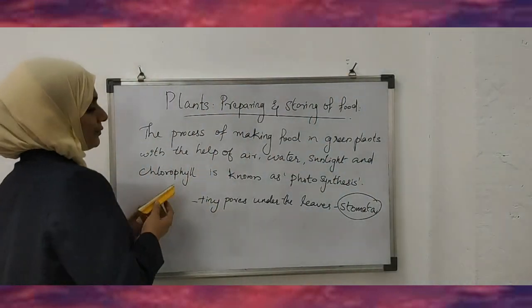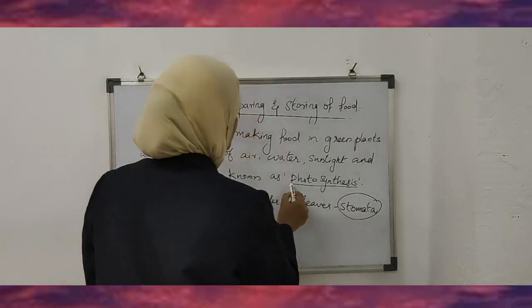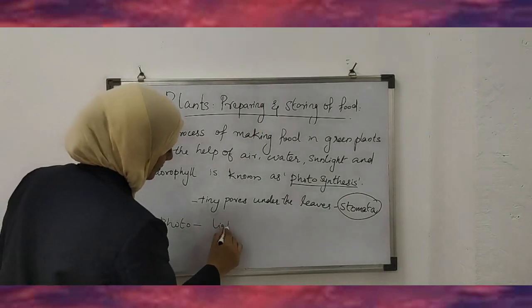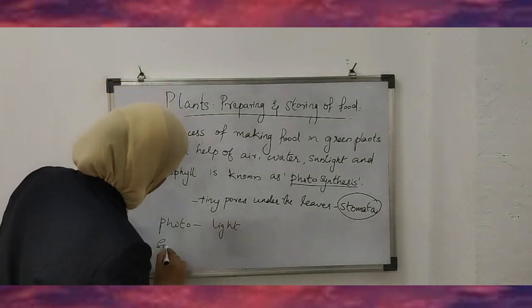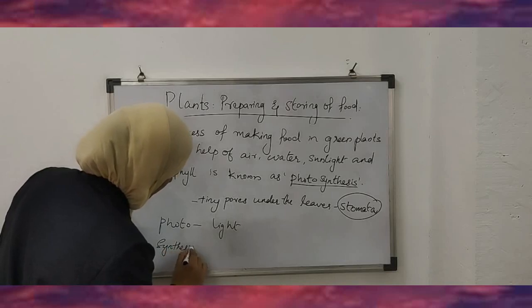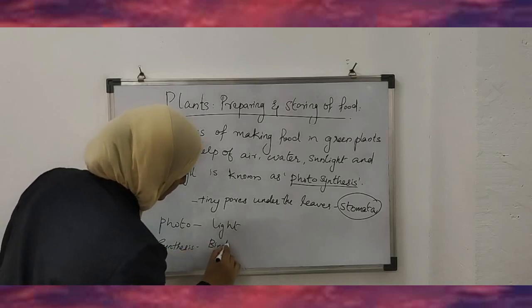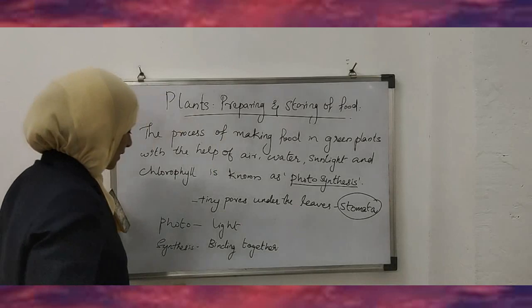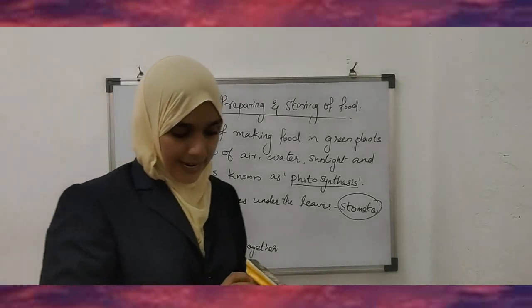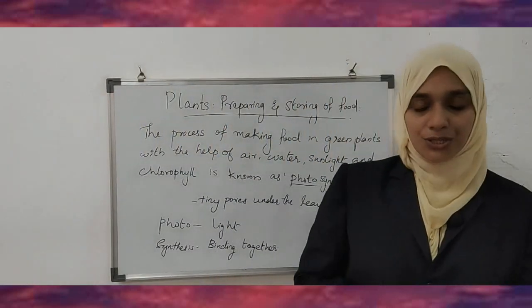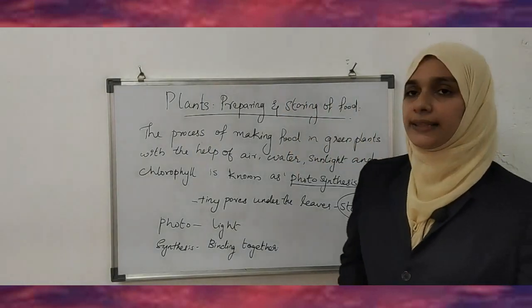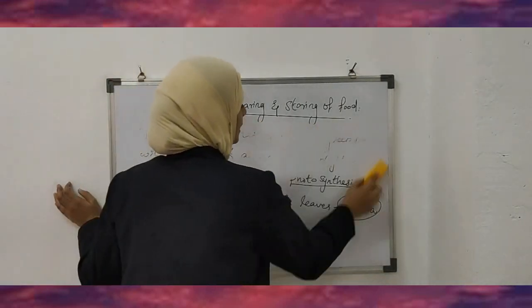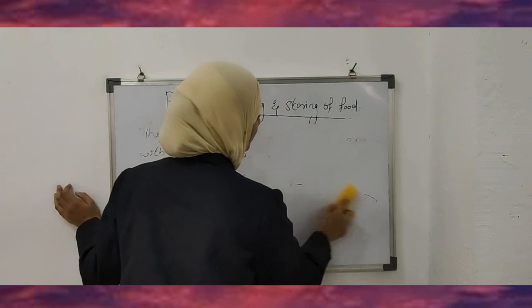This process is called photosynthesis. Photo means light, and synthesis means binding together. So photosynthesis is the process of using light to bind things together to make food. As I already told, leaves are very important to plants. Next, we are going to study about the different parts of leaves.